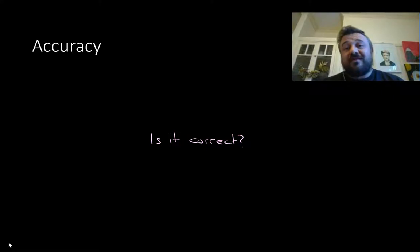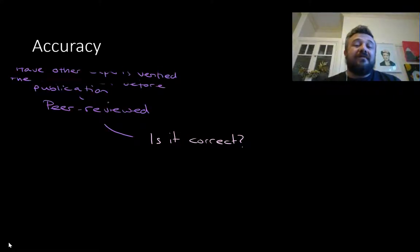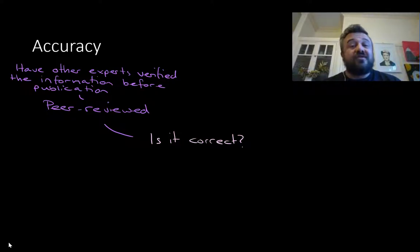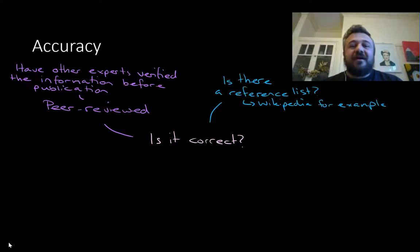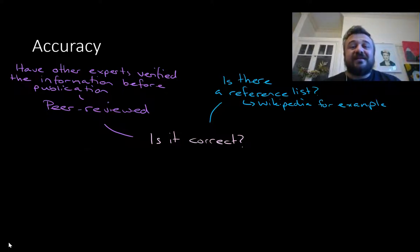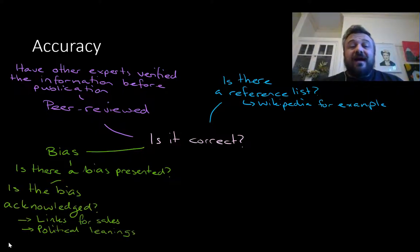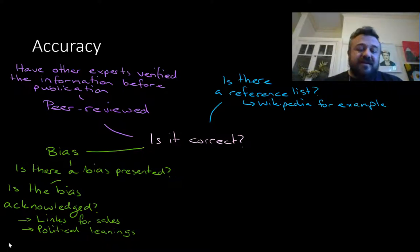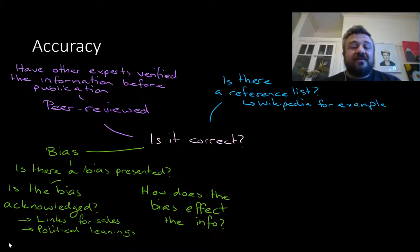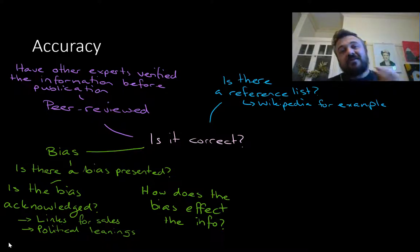And accuracy — is it correct? Is it peer-reviewed? This is when we have other experts verifying the information before it's published. You see this a lot in scientific journals. Is there a reference list? Wikipedia, for example, has a reference list that you can check exactly. Is there a bias presented? And if there is a bias, because that's not necessarily a bad thing, is it acknowledged? Are there political leanings, links for sale, and all that sort of stuff? Is there a bias in here which is at least acknowledged? And how does the bias affect the information? Do they ignore all of the positives you've found in other places, just to make their point?